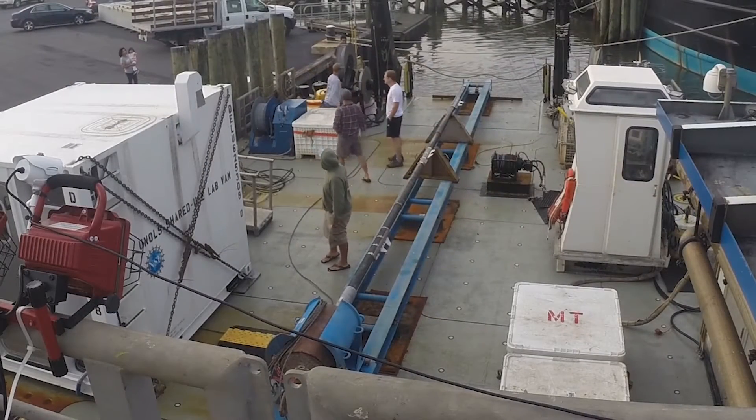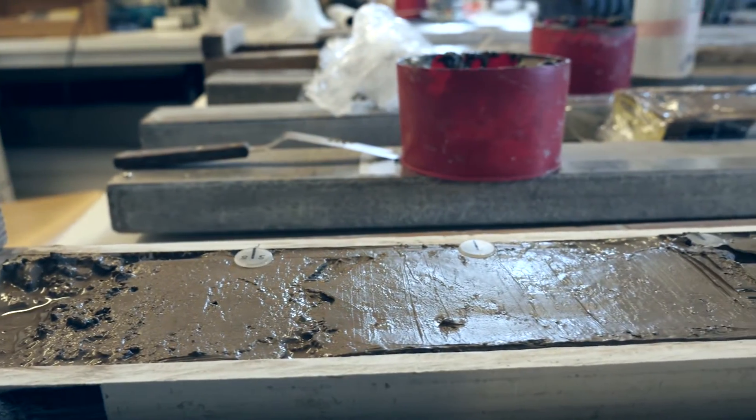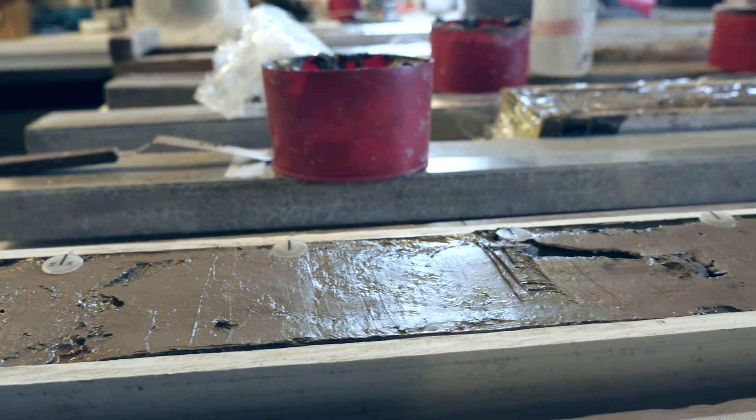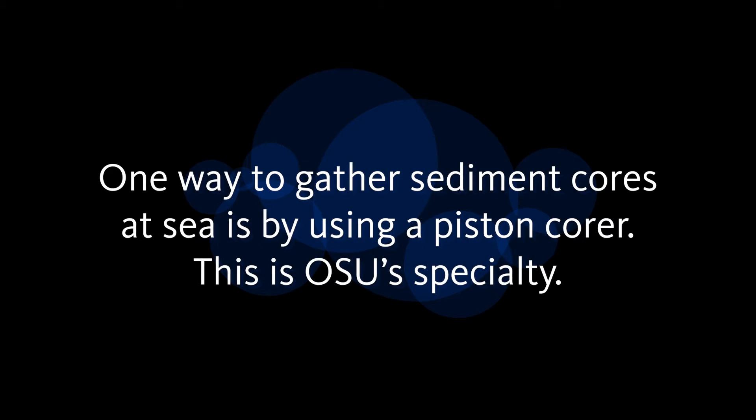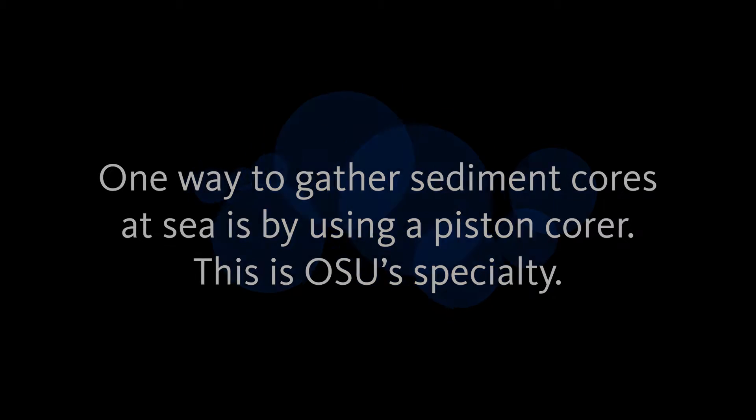A sediment core is a way of sampling the bottom of the ocean or the bottom of a lake. You collect the sediment at the bottom with essentially a long tube with a lot of weight on it that penetrates into it and goes through different layers of time. Basically the stuff on the bottom is older than what's on top, so it accumulates through time and it's a way of accessing this potential history of the earth.